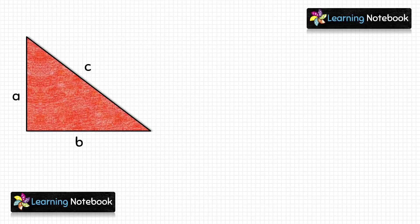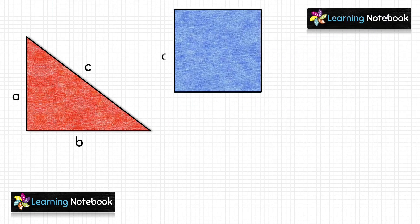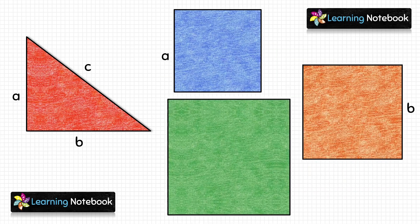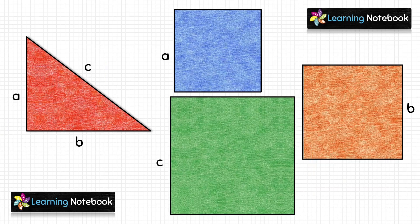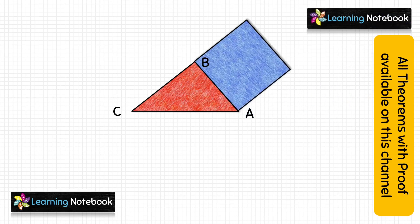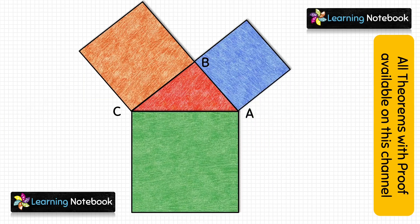So we have cut out a red right-angled triangle with sides a and b and hypotenuse c. We have also cut out a blue square with side a, an orange square with side b, and a green square with side c. Now first take the right-angled triangle and place it, then place the three squares along the three sides of this triangle.